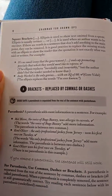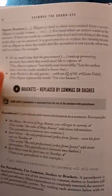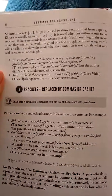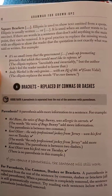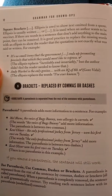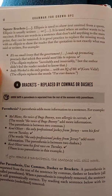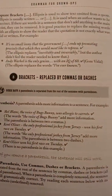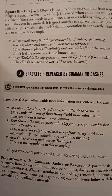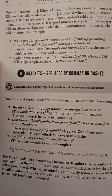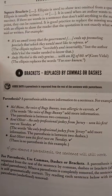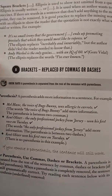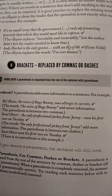Square brackets: ellipsis is used to show text omitted from a quote. Ellipsis is used when an author wants to be succinct. If there are words in a sentence that don't add anything to the main point, they can be removed. It's good practice to replace the missing words with an ellipsis to show the reader that the quotation is not exactly what was said or written. For example: 'it's no small irony that the government ends up promoting precisely that which they would most like to repress' — the ellipsis replaces 'inevitably and invariably.' Another example: 'Andy Warhol's the only genius with an IQ of 60' — the ellipsis replaces 'I've ever known.'